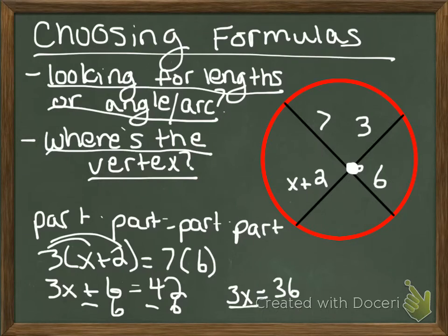So 3x equals 36. Divide both sides by 3. That gives me x equals 12. So your answer if you're looking for x is x equals 12. If you're looking for the length, you would plug it back in and do 12 plus 2 equals 14.